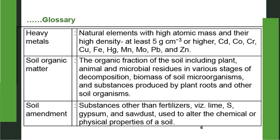Density of heavy metals may be at least 5 grams per cubic centimeter or higher. Examples of heavy metals are cadmium, cobalt, chromium, copper, iron, mercury, manganese, molybdenum, lead and zinc. Soil organic matter: the organic fraction of the soil including plant, animal and microbial residues in various stages of decomposition, biomass of soil microorganisms, and substances produced by plant roots and other soil organisms. It has a very important role, particularly in organic farming.